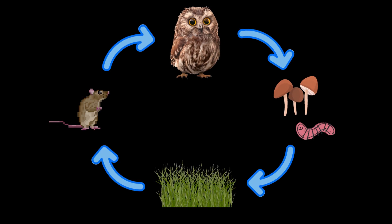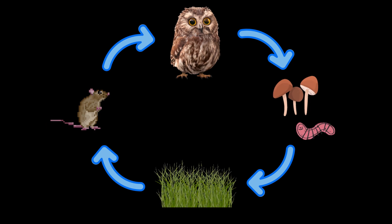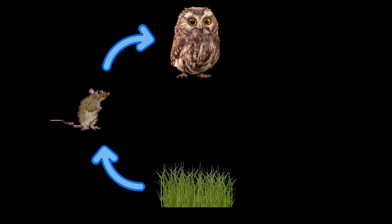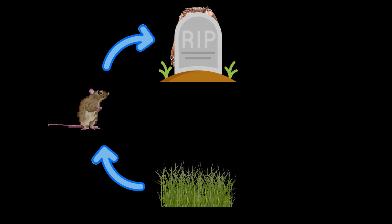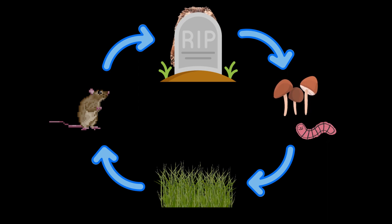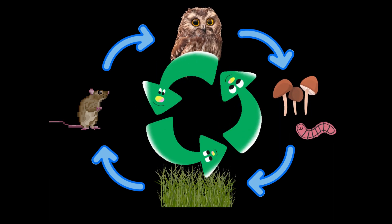Living organisms depend on all of the other parts of the ecosystem to survive. The owl needs mice to eat, and the mouse needs food from the plants to survive. Then, when the organisms die, worms and mushrooms break them down and turn them into nutrients that go back into the soil, which then help the plants grow. Notice that matter and energy are always cycling through the environment.